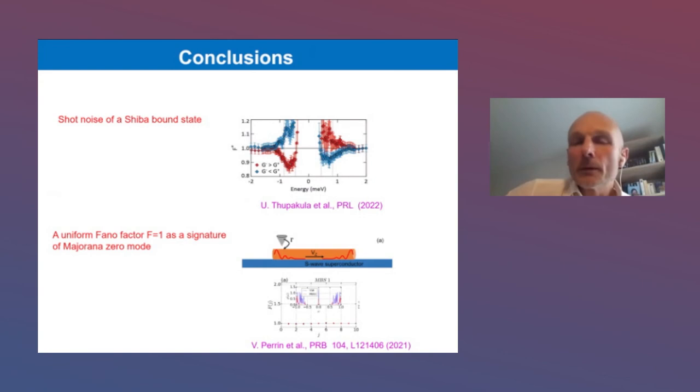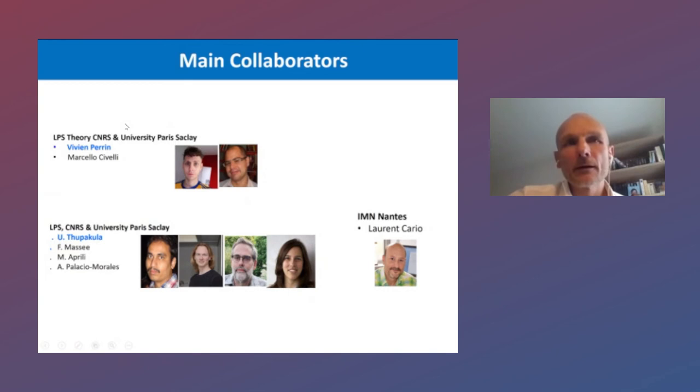This brings me to my conclusions. I showed you the use of shot noise for Shiba bound states, with a pretty good understanding of the experimental data shown by Frick Massé. And the theory proposal uses the Fano factor as a signature of Majorana bound states. This could be a necessary ingredient, maybe not foolproof, but could be an interesting tool to develop. And to finish, let me thank my main collaborators, especially Vivien Perrin, PhD student, and Matthieu Civelli, and my colleagues, Frick Massé, Marco Aprili, Djuro Pakula, and Alessandra Palacio Morales. Thank you for your attention.